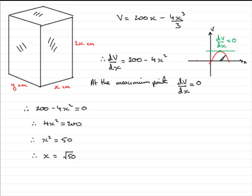We now need to substitute it back into this equation, and we'll get the corresponding value of V. So, essentially, when x equals root 50,